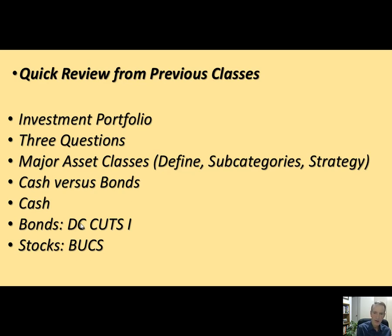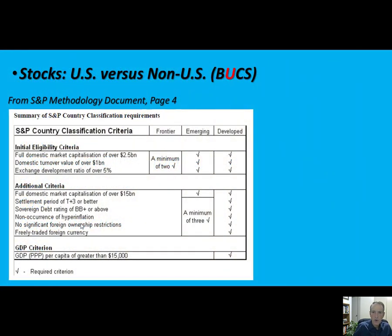What I want to show you is how Standard & Poor's methodology — I gave you that as a link in Blackboard — defines whether a market is emerging, developed, or frontier. There are two documents I gave you: one from S&P and the other from MSCI. MSCI used to be Morgan Stanley Capital Indices, but now it's all by itself — it was spun off from Morgan Stanley.